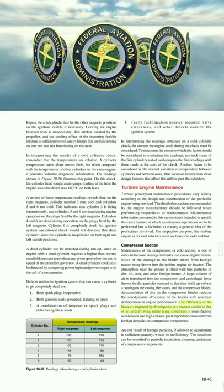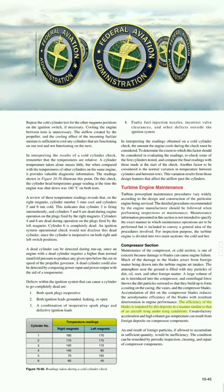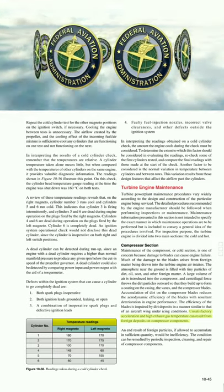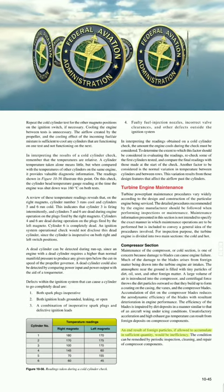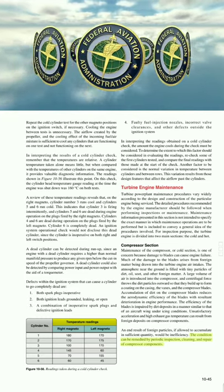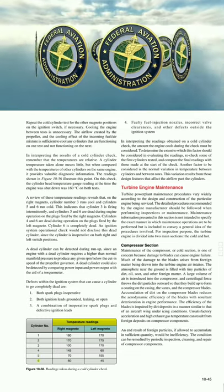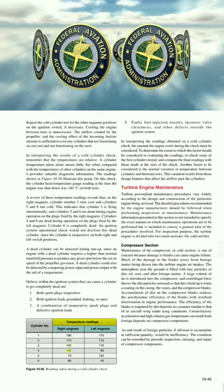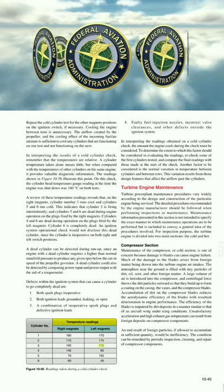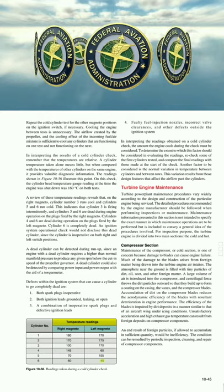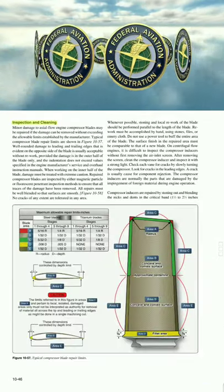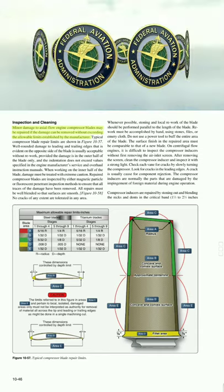The atmosphere near the ground is filled with tiny particles of dirt, oil, soot, and other foreign matter. A large volume of air introduced into the compressor causes centripetal force to throw dirt particles outward, building up a coating on the casing, vanes, and compressor blades. Accumulation of dirt on compressor blades reduces the aerodynamic efficiency of the blades, causing deterioration in engine performance — similar to the effect of icing on an aircraft wing. Unsatisfactory acceleration and high exhaust gas temperature can result from foreign deposits on compressor components.